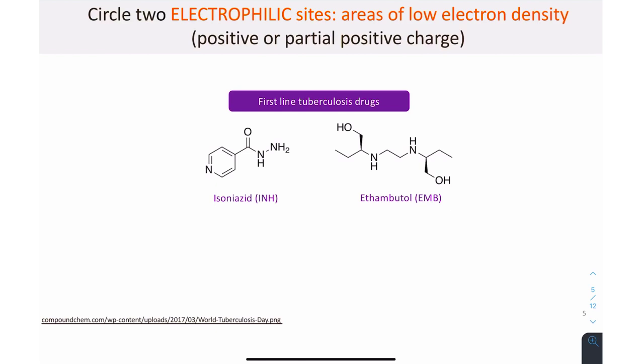Now identify electrophilic sites, looking for atoms bearing a positive or partial positive charge. I'll draw in some of the dipoles that then allow me to circle some of the carbon atoms that bear partial positive charges.